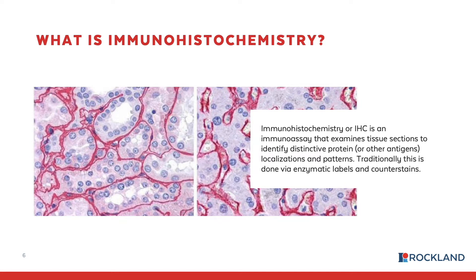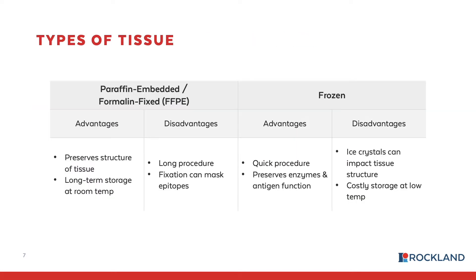As we move towards the fluorescent methods or immunofluorescent, we'll talk a little bit about fluorescent methods for tissue immunoassays. Now there are two types of tissue preparations for IHC: they are paraffin embedded or formalin fixed, which you usually see abbreviated as FFPE, or frozen tissues. Both of these tissue types have their advantages and disadvantages, and a researcher is going to choose them based on their needs, such as the localization of their antigen.